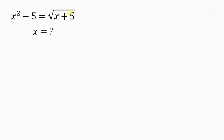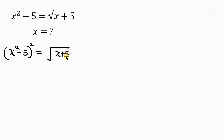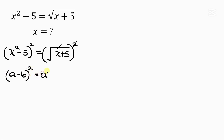Our first step is to get rid of this square root, and we do that by squaring both sides. For the left hand side I have x squared minus 5, and for the right hand side I have the square root of x plus 5. Squaring the right hand side cancels off the square root. The left hand side is of the form (a minus b) squared, which expands as a squared minus 2ab plus b squared.